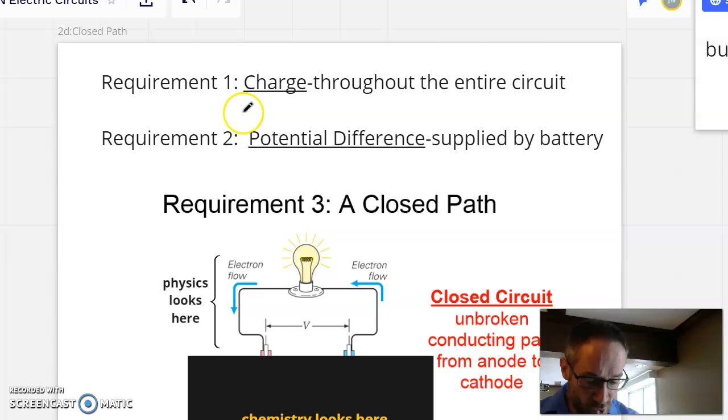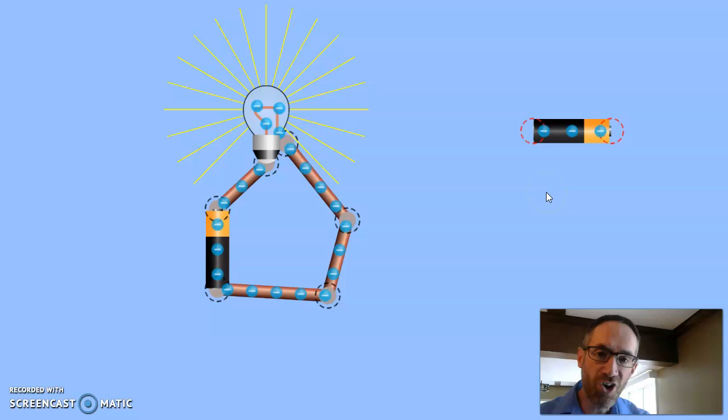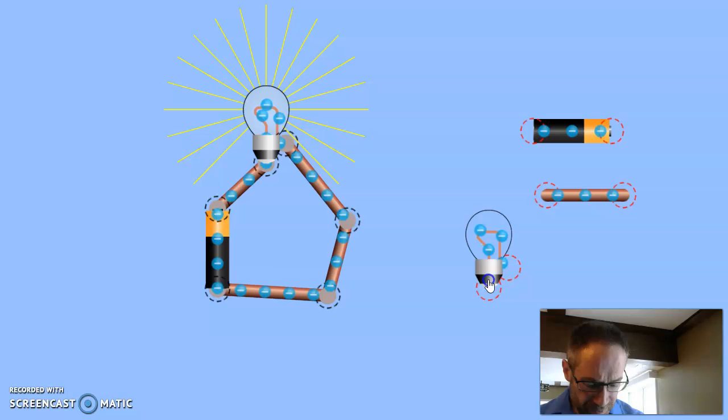If you can remember what we saw on our simulator, we'll just toggle back over to that. When I brought the battery over, it has charges in it already. Wire. Yep. Charge is in there too. Light bulb. Yep. Charge is there too. And so some people think that the charge purely comes from the battery, not the case. The battery supplies the potential difference, but it doesn't supply the charge. It supplies some of the charge, but so does the wire, and so does the bulb itself.